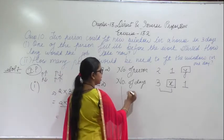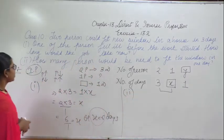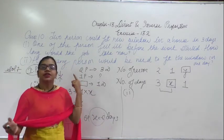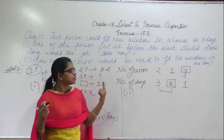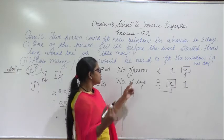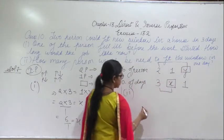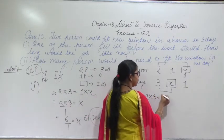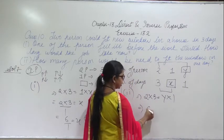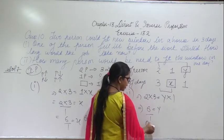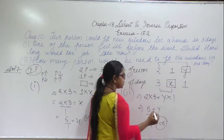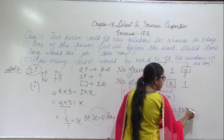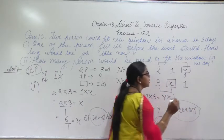Now for the second part: how many persons would be needed to fit the window in one day? This is also a condition of inverse proportion. So 2 into 3 equals y into 1, giving 6 equals y. So y equals 6, meaning 6 persons will be needed to fit that window in one day.